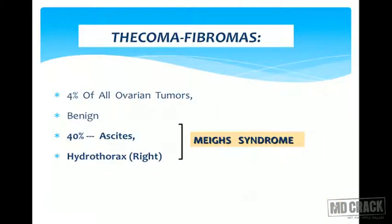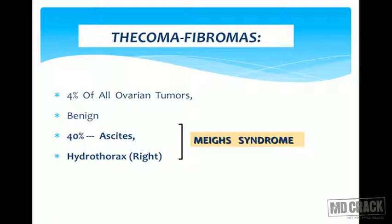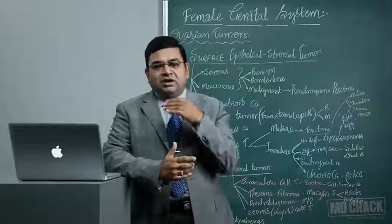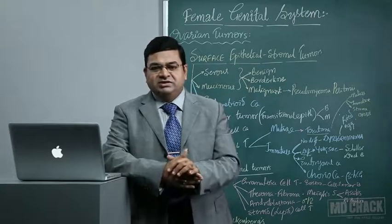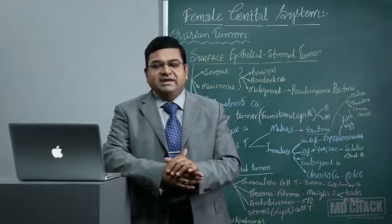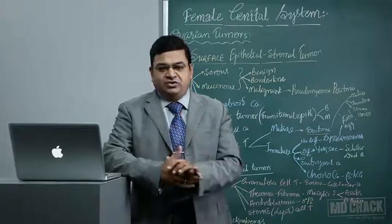Thecomas and fibromas account for about 4% of ovarian tumors. When bilateral, they cause ascites in 40% of cases and right-sided hydrothorax — this is Meigs syndrome. Meigs syndrome is the triad of bilateral ovarian fibromas or thecomas, ascites, and right-sided hydrothorax.